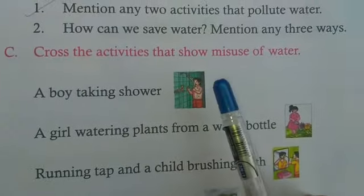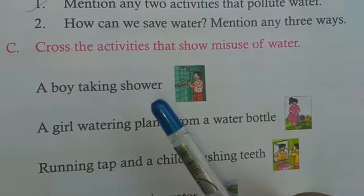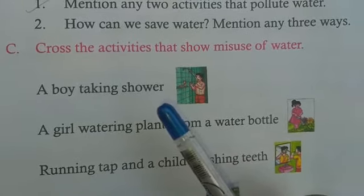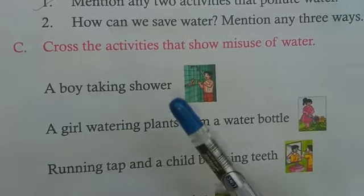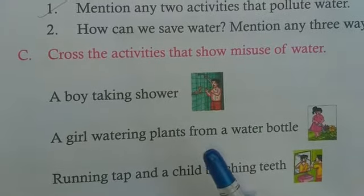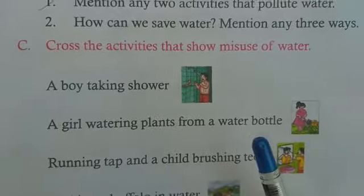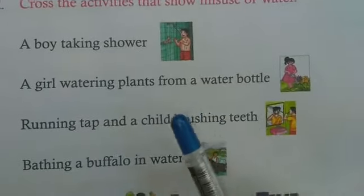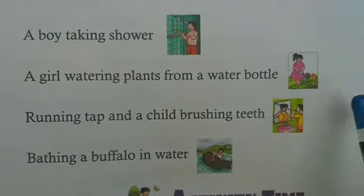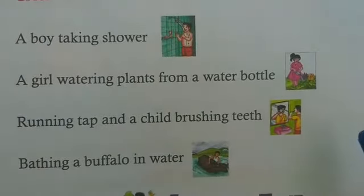Cross the activities that show misuse of water. We have to cross the activities which show wastage or misuse of water. A boy taking a shower — cross. A girl watering plants from a water bottle — leave it. A running tap with a child brushing teeth — cross. Bathing a buffalo in water — cross.